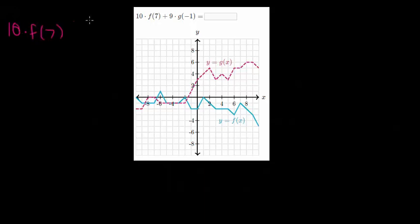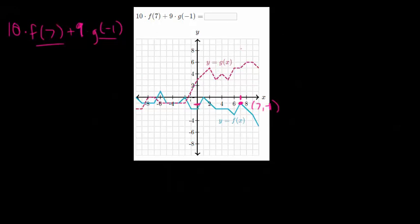Let's do one more for extra practice. We have 10 times f of 7 plus 9 times g of minus 1. For f of 7, f is our blue curve, and at x equals 7 it looks like the point is 7 comma minus 1, so the y value is minus 1. For g of minus 1, at x equals negative 1 we go up to the purple function which looks to have a y value of 1, so that point is minus 1 comma 1.